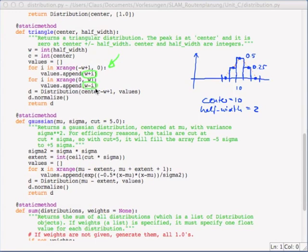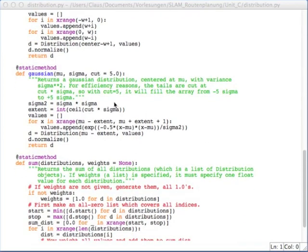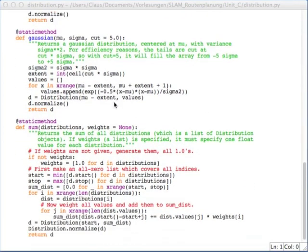And then after I did this, I construct a distribution which starts at center minus width plus 1. Because center minus the width is here. And those values are always 0. So, I don't need to store them. I'm starting here. I'm storing those values. I give the value array to the distribution. And at that time, it is not normalized. And then I just call the normalized function. There's also a Gaussian distribution here. And we will talk about that later.